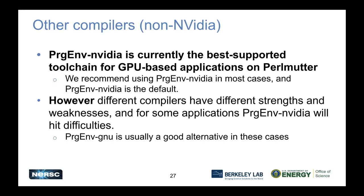What if you're not using the NVIDIA compiler? We recommend PrgEnv-nvidia as the first approach for most GPU-based applications on Perlmutter - it has the best support for the GPU toolchain and is loaded by default. However, we have four different compiler stacks with different strengths and weaknesses. Our second recommendation is PrgEnv-GNU, which is widely supported, pretty portable, and gets bug fixes and features quickly. We also have PrgEnv-Cray and PrgEnv-AMD on the system - type 'module avail PrgEnv' to see them.